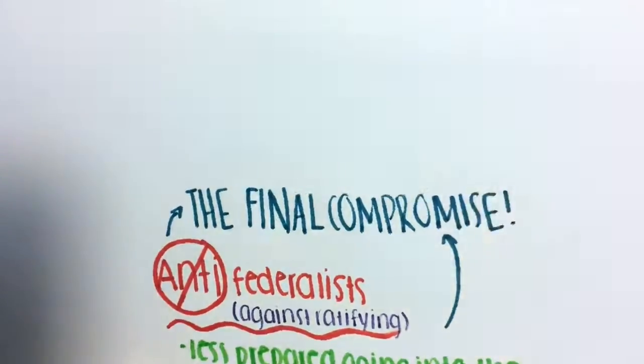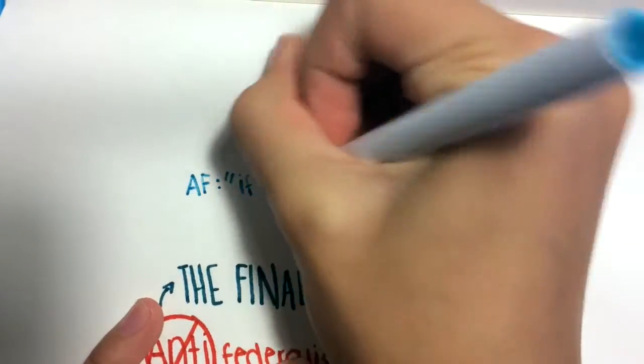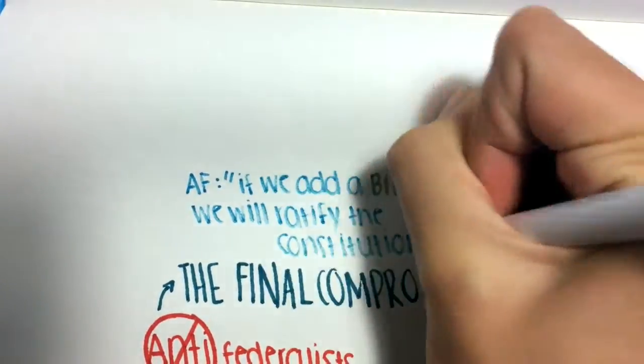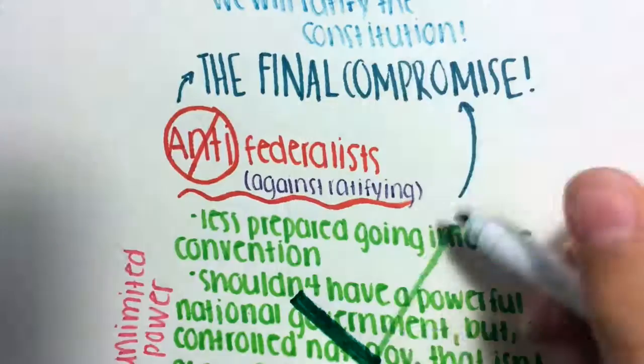With all these grand arguments, an expected compromise occurred, granting both sides their wishes in exchange. The final compromise, said by the Anti-Federalists, was that if we add a Bill of Rights, we will ratify the Constitution.